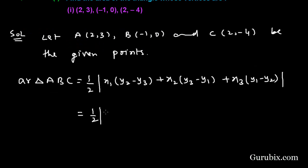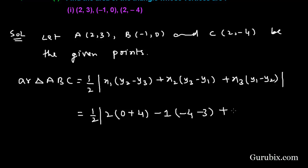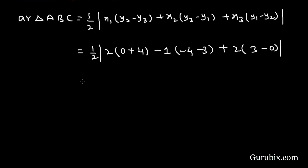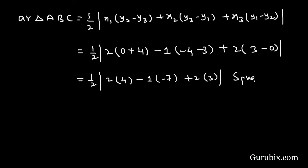Here we have 1/2, x1 is 2, y2 is 0, y3 is -4, so 0 minus (-4) gives 0 + 4. x2 is -1, y3 is -4, y1 is 3. x3 is 2, y1 is 3, y2 is 0. Solving further, this equals 1/2 times |2(4) + (-1)(-7) + 2(3)| square units.